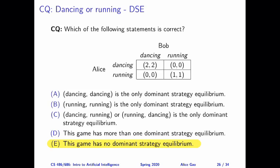In this question, we looked at the second normal form game about dancing or running, and the question is, does this game have a dominant strategy equilibrium?